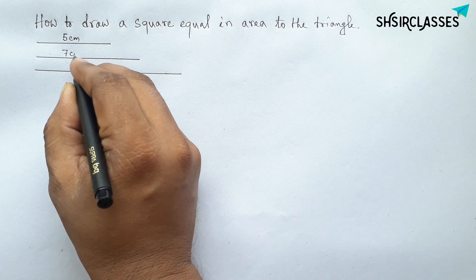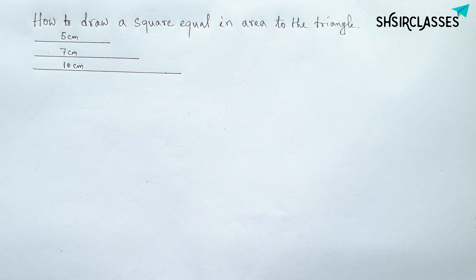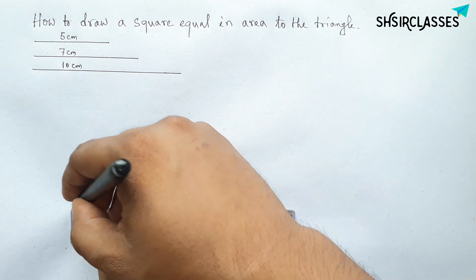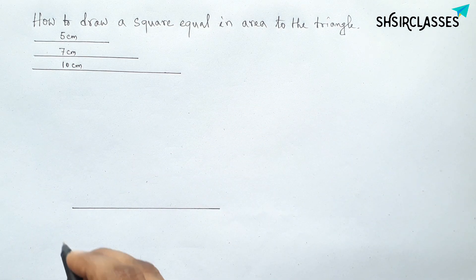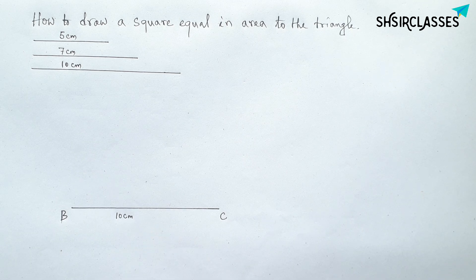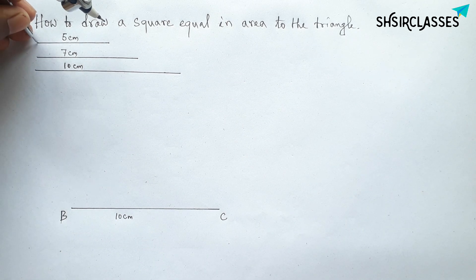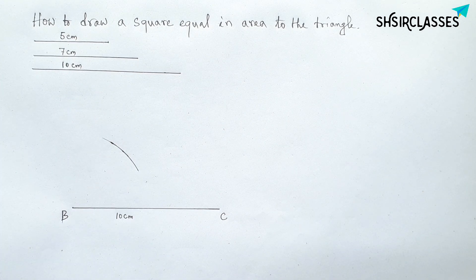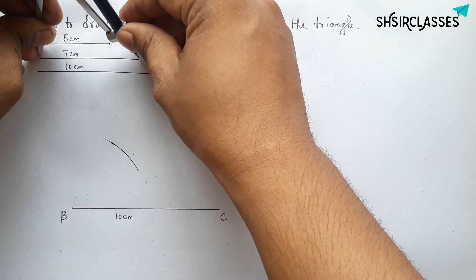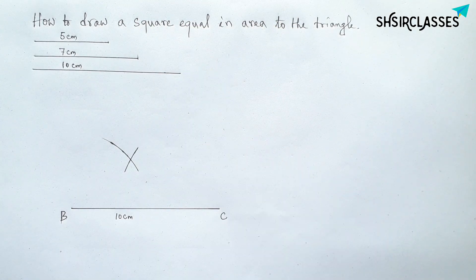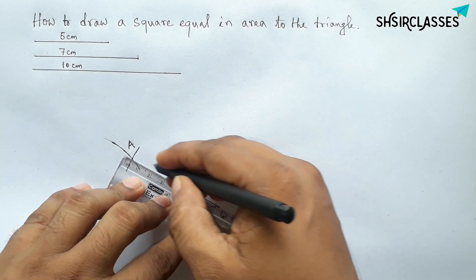With sides five centimeters, seven centimeters, and ten centimeters, draw a line segment BC equal to ten centimeters. Next, measure five centimeters, place the compass on point B, and draw an arc. Then take seven centimeters, place the compass on point C, and cut the arc to mark point A.